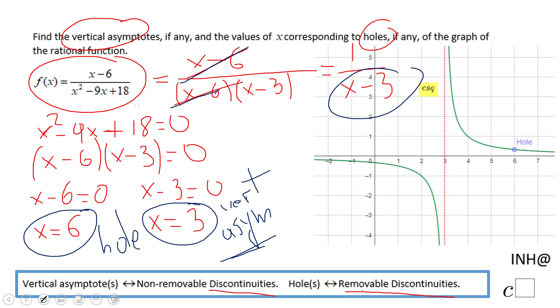And you see that in the graph, a hole at 6. If you zoom in, a vertical asymptote at 3.